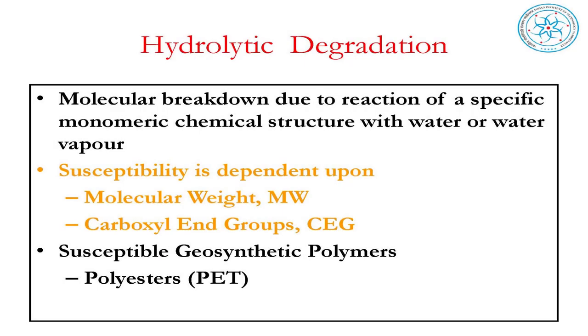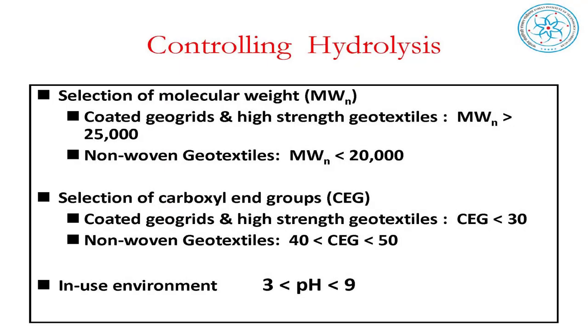Two important polymer chemistry parameters: molecular weight and carboxyl end groups (CEG). Higher molecular weight is better — we require at least 20,000, and upward is better. For coated geogrids and high-strength geotextiles, molecular weight required is 25,000 and above. For non-woven geotextiles, 20,000 is sufficient. The CEG should be less than 30 for coated geogrids and between 40 and 50 for non-woven geotextiles.